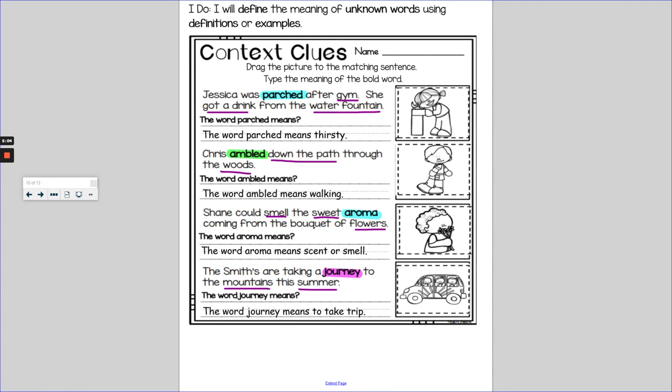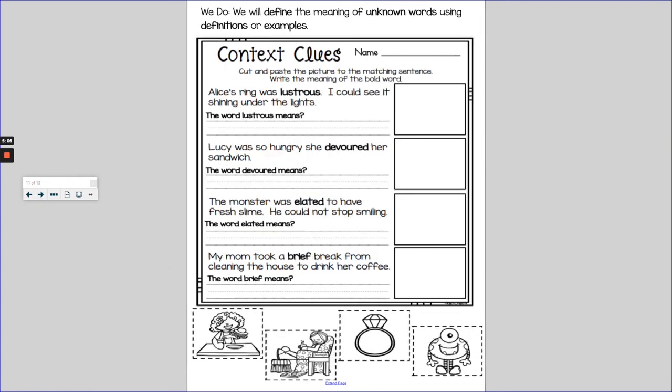So that is what you are doing today. You can go ahead and move on to your WeDo where you'll be cutting and pasting this out, not dragging and typing. You will be cutting and pasting the picture to the matching sentence and writing the meaning of the bold word.